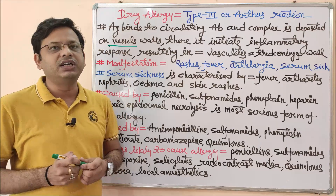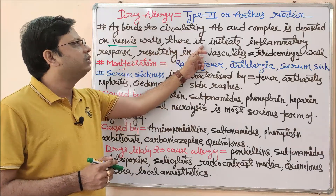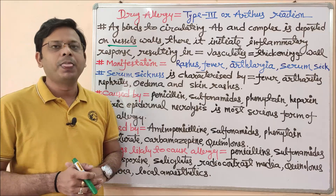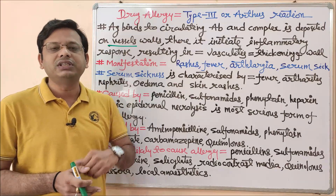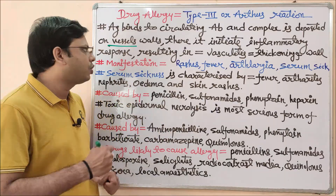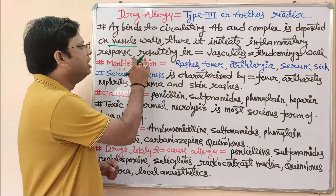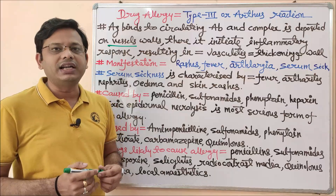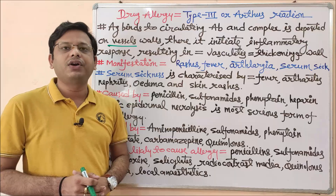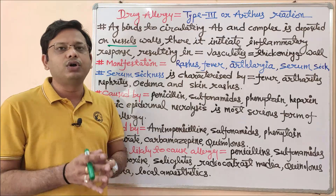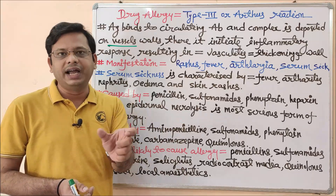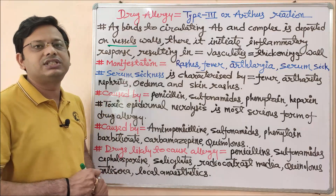This antigen interacts with the circulating antibody, and their complex is deposited on the wall of vessels. Once deposited on the vessels, there will be an initiation of inflammatory response. Inflammation involves the starting of different mediators of inflammation, and this inflammatory response may result in vasculitis, which is thickening of the vessel wall, caused by the antigen-antibody interaction resulting from the drug-protein interaction.